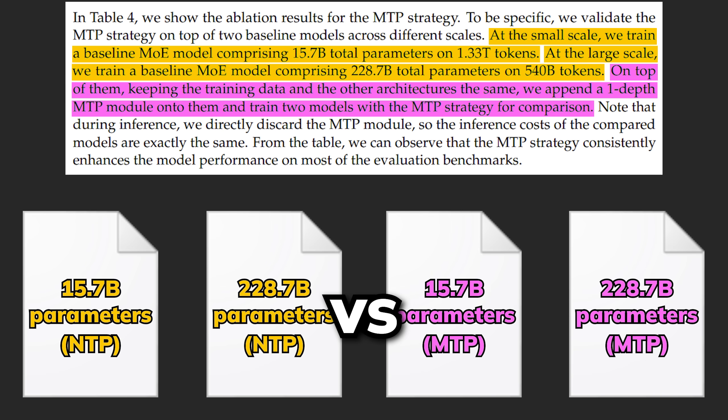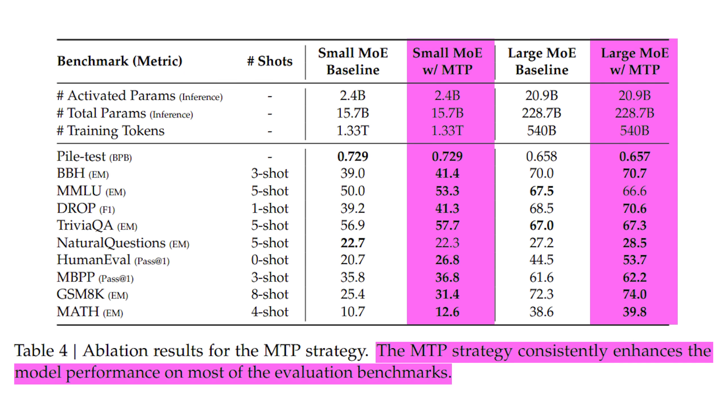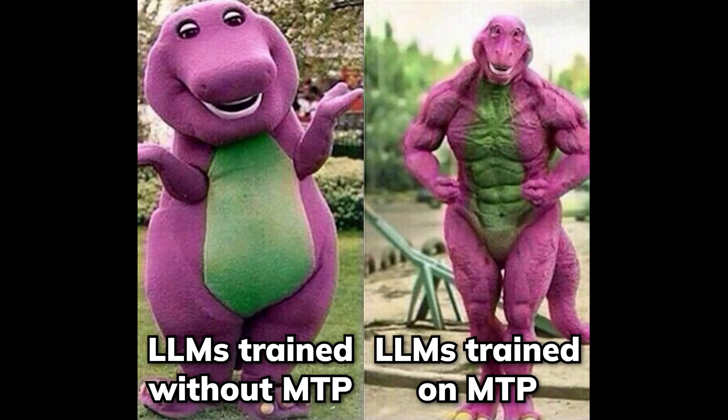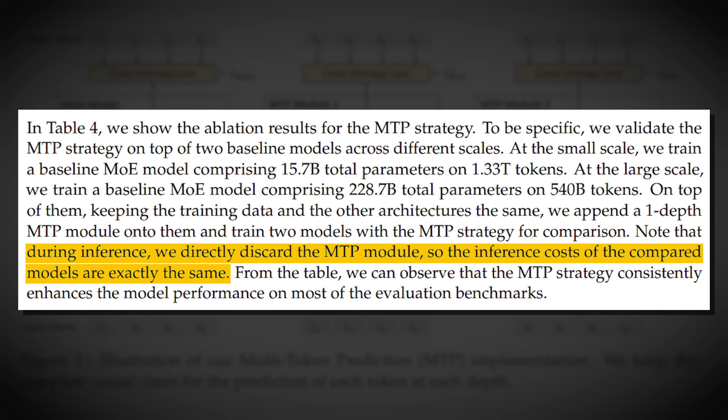With the results showing that the models trained with the MTP auxiliary objective consistently perform better almost across the board. This shows that using MTP purely as a training technique would basically enhance the core capabilities of the language model itself with barely any compute overhead.